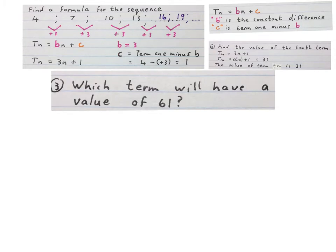They can also ask you which term will have a value of 61. Then you write 3n + 1 = 61. You can do it mentally by saying 3 times what plus 1 is 61.